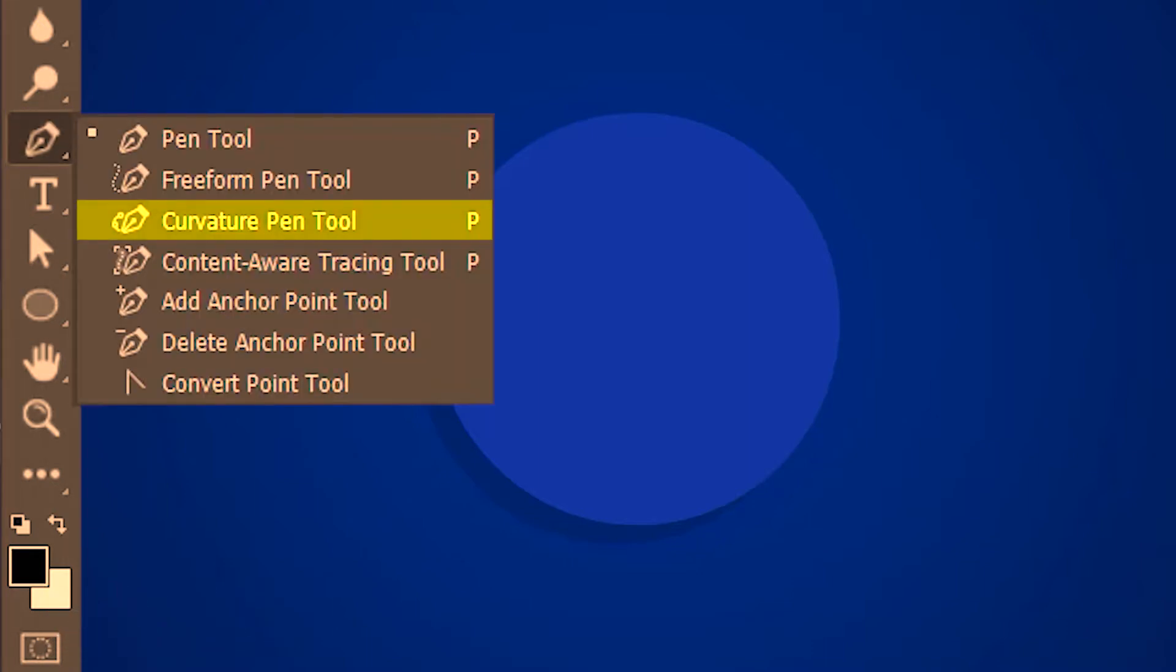Welcome to ArtMind. Today we are learning the curvature pen tool in Photoshop. The curvature pen tool is located over here and its shortcut is P.